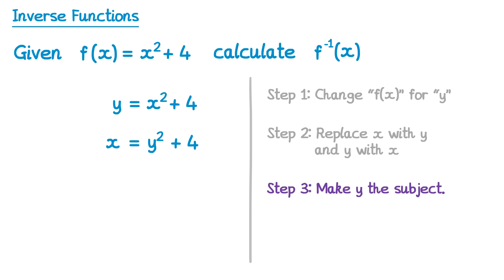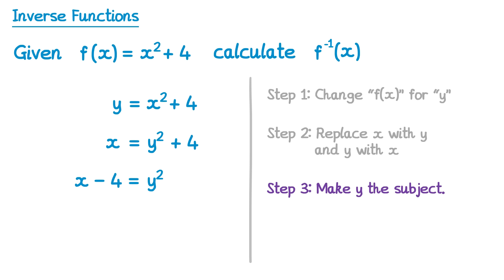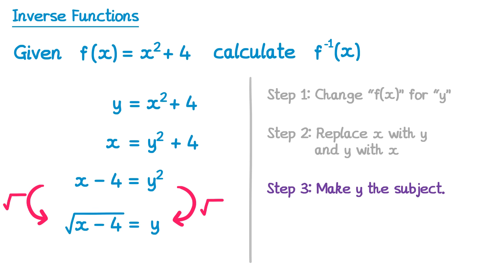Step 3: rearrange to make y the subject. Subtract 4 from both sides — on the right that cancels the 4 to leave y squared, and on the left it's x − 4. To undo the square we square root both sides: on the right we get y, and on the left we get √(x − 4). When you square root both sides you'd normally consider plus or minus, but when writing a function it must be well defined — each input can have only one output — so we just take the positive root and don't write plus or minus.